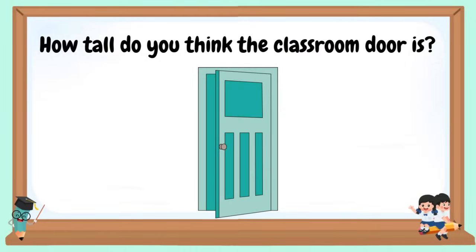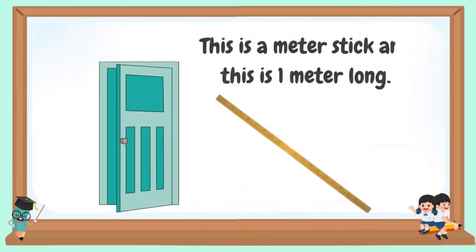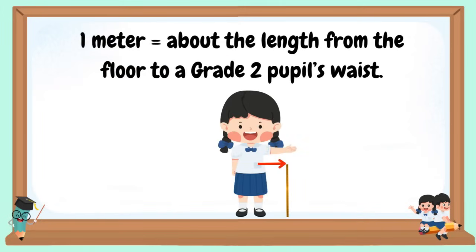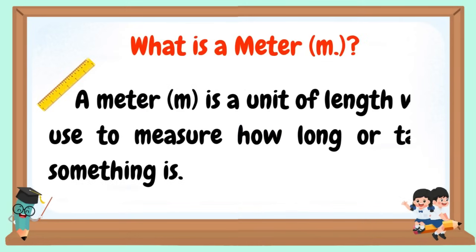How tall do you think the classroom door is? This is a meter stick and this is one meter long. One meter is about the length from the floor to a pupil's waist. What is a meter? A meter is a unit of length we use to measure how long or tall something is.